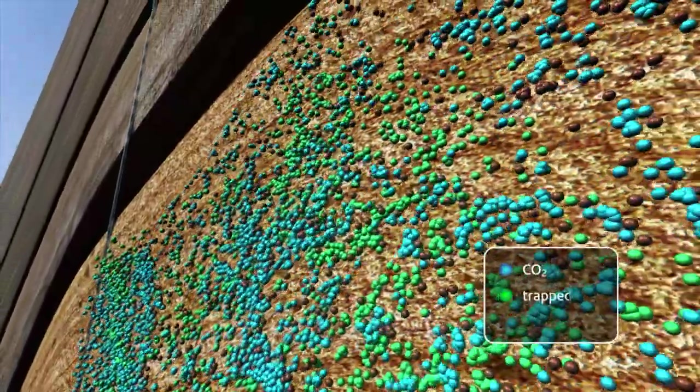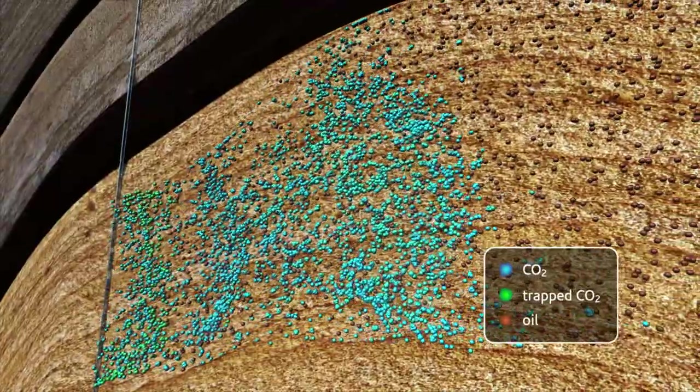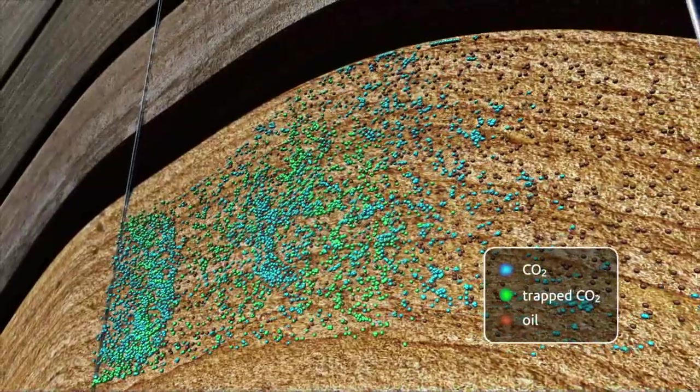During this process, the CO2 becomes trapped in the rock and is permanently stored in the pore spaces, in the same way oil was trapped in the formation millions of years ago.